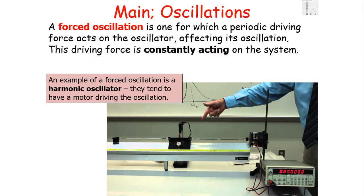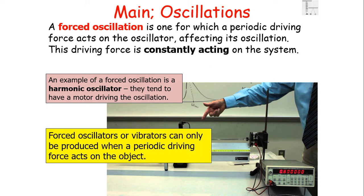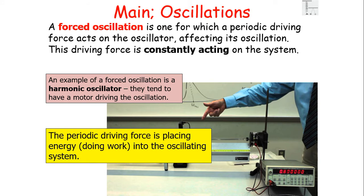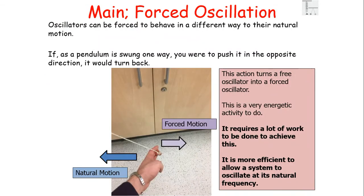A forced oscillation is one for which a periodic driving force acts on the oscillator, affecting its oscillation — this driving force is constantly acting on the system. An example of a forced oscillation is a harmonic oscillator, which tends to have a motor driving the oscillation. Forced oscillators can only be produced when the periodic driving force acts on the object, placing energy into the oscillating system. Oscillators can be forced to behave differently from their natural motion.